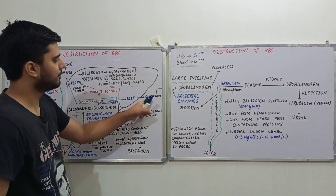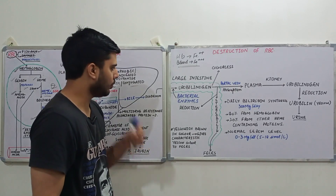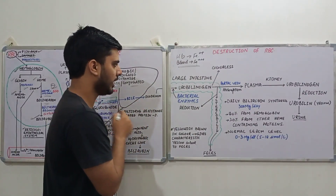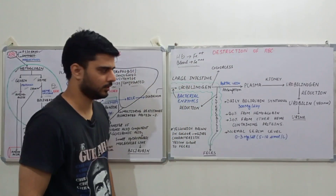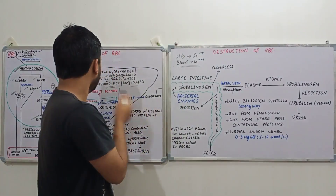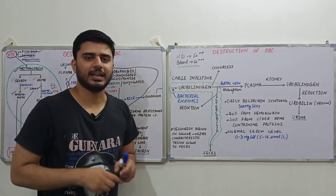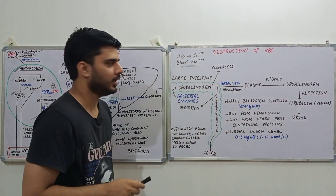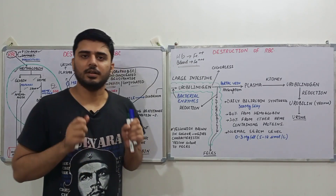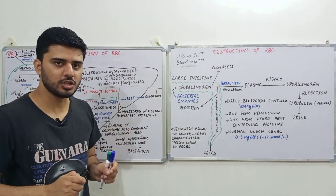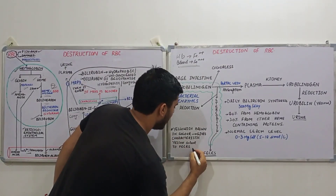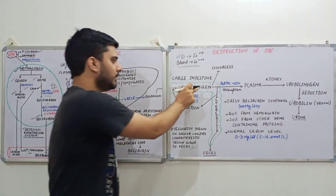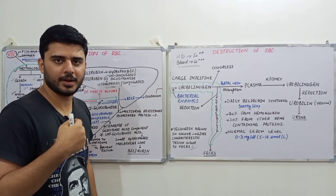Bile released into the duodenum travels to the large intestine. In the large intestine, various bacteria convert bilirubin diglucuronide into urobilinogen. Urobilinogen can then be reduced to stercobilin, which is yellowish-brown in color. Stercobilin is responsible for the characteristic yellow color of feces — this is an important question.